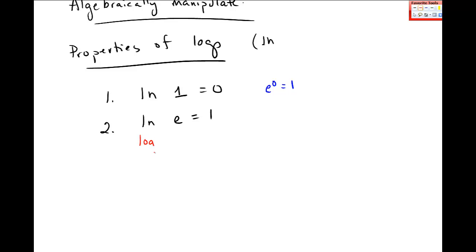So I had this log base b of a is equal to c. In this case, the base is not written, but when I switch, the base is really base e. So when I go over here to this other form, which is b to the c equals a.